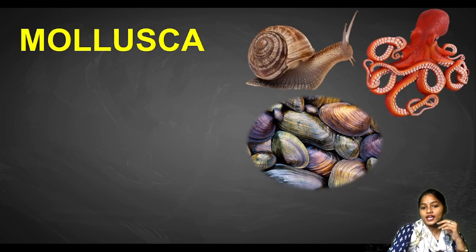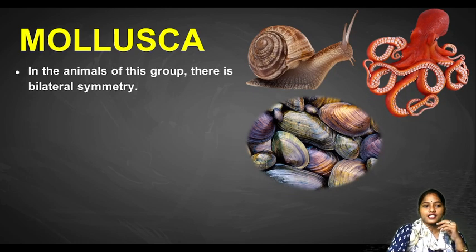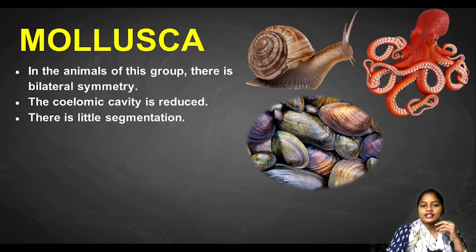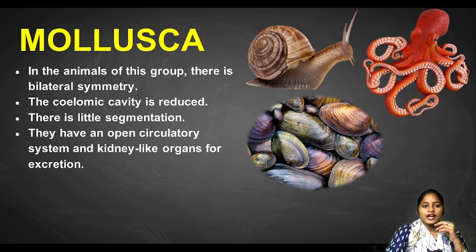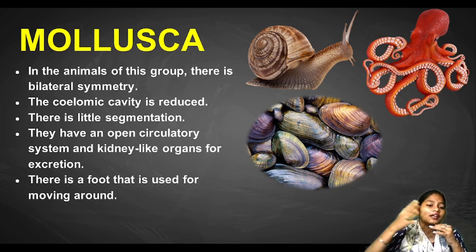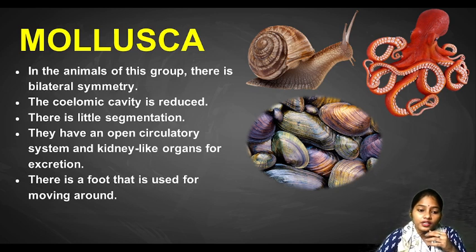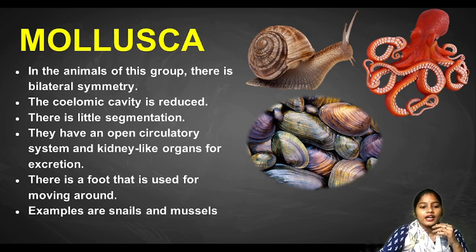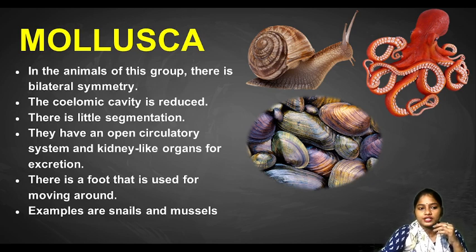Next is Mollusca. Animals of this group are also bilaterally symmetrical, with a reduced coelomic cavity. There is little segmentation and they have an open circulatory system. They have kidney-like organs for excretion and a foot used for moving around. Examples include snails, mussels and octopus.